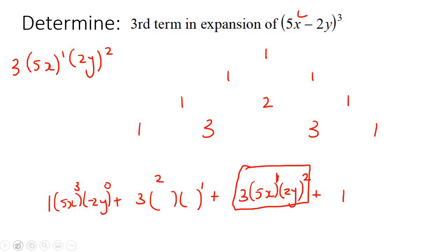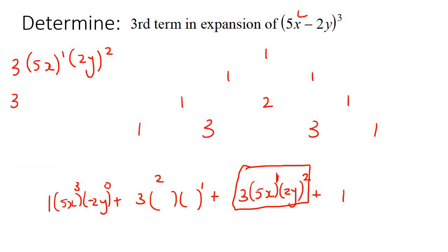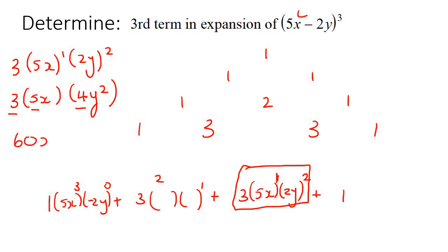So we have 3 times 5x to the power of 1, which just remains 5x, and then negative 2y to the power of 2. Now 2 to the power of 2 is 4, so it's 3 times 5x times 4y². Multiplying 3 times 5 gives 15, times 4 gives 60, and then xy² as our final answer: 60xy².